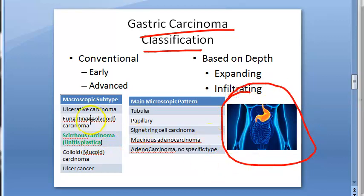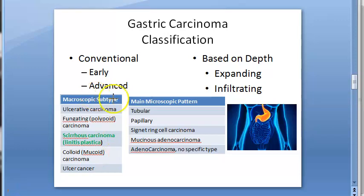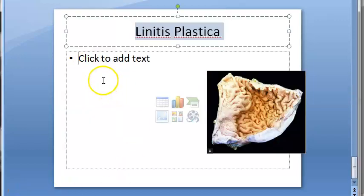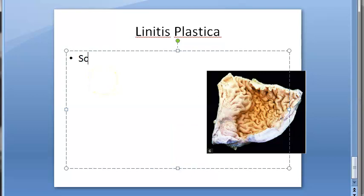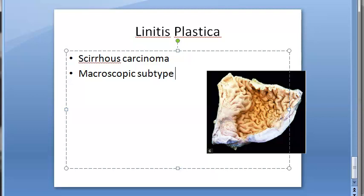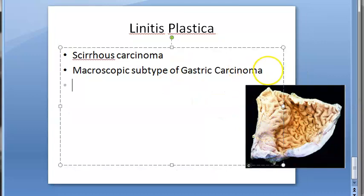This is the classification of gastric carcinoma of the stomach. We want to focus on linitis plastica today. Linitis plastica is the scirrhous carcinoma — spelled C-I-R-R-H-O-U-S — a macroscopic subtype of gastric carcinoma of the stomach or of the GIT. In this pattern, the stomach wall is thickened due to extensive desmoplasia, giving the appearance of a leather bottle stomach.